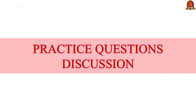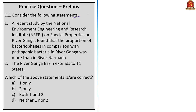Moving on to the last session — practice questions discussion. Question 1: Consider the following statements. Statement one: a recent NEERI study on special properties of River Ganga found that the proportion of bacteriophages compared to pathogenic bacteria in River Ganga was more than in River Narmada. Statement two: the River Ganga Basin extends to 11 states. From our analysis, statement one is correct. For statement two, the Ganga River Basin extends to Uttar Pradesh, Bihar, West Bengal, Madhya Pradesh, Rajasthan, Jharkhand, Haryana, Uttarakhand, Chhattisgarh, Himachal Pradesh, and the Union Territory of Delhi — a total of 11 states.